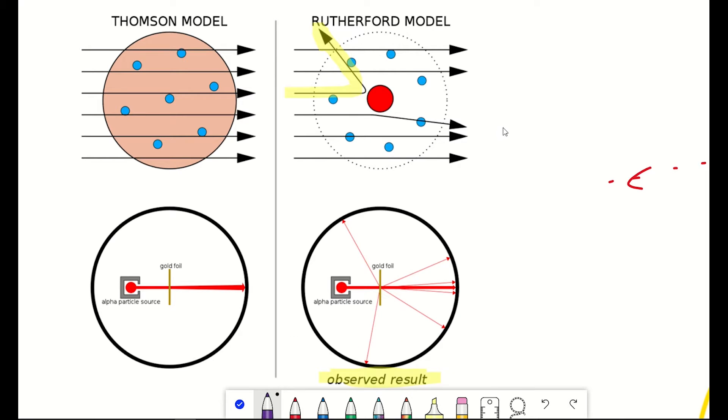And Rutherford then hypothesized that the positive charge of the atom was concentrated in the tiny nucleus, and that most of the atom's volume was empty space. So the data drove rational thinking about what is happening and what should be done next.